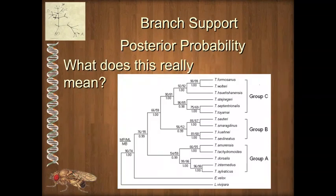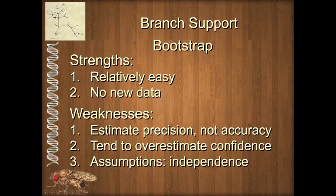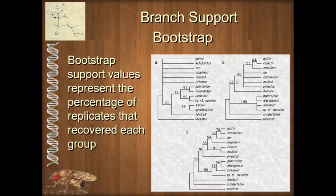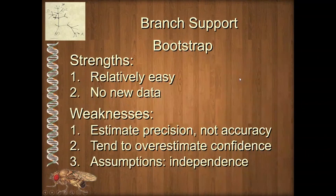So that's bootstrap support value. The strengths are that it's really easy to do and you don't have to get any brand new data. But sometimes that leads to over-reliance on it. Remember, like all branch support measures, it's really an estimate of precision, not accuracy. Experiments on simulated data have shown that bootstrap tends to overestimate branch confidence — they tend to be inflated, particularly as data sets get bigger. Also, we are assuming every character we sample is independent; if some characters are dependent on one another due to compensatory mutations, we get a biased sample in those pseudo-replicates.